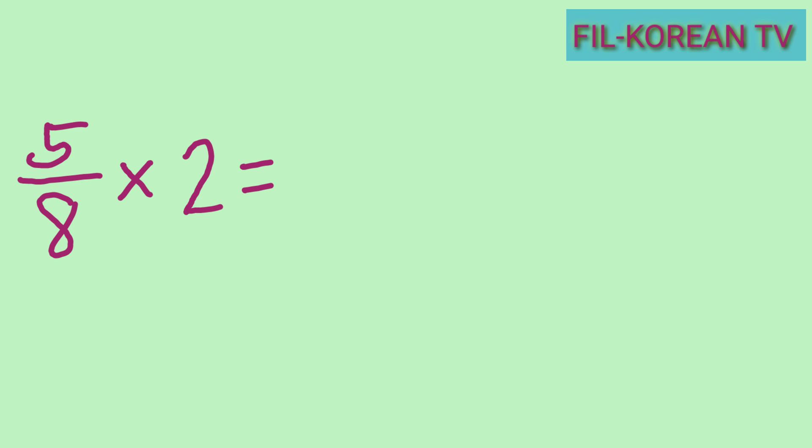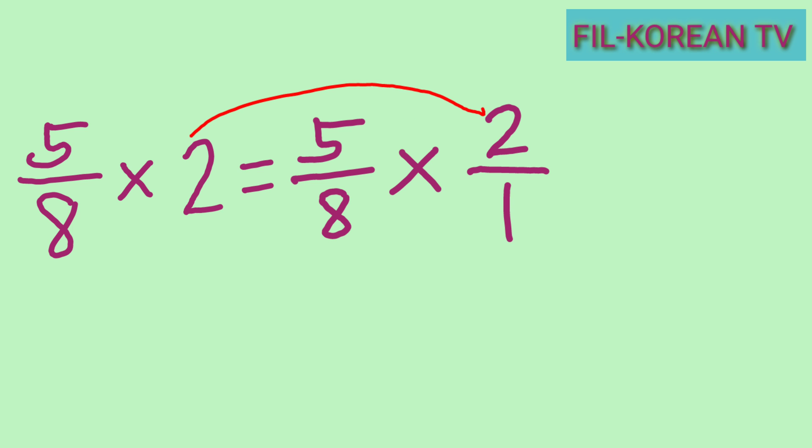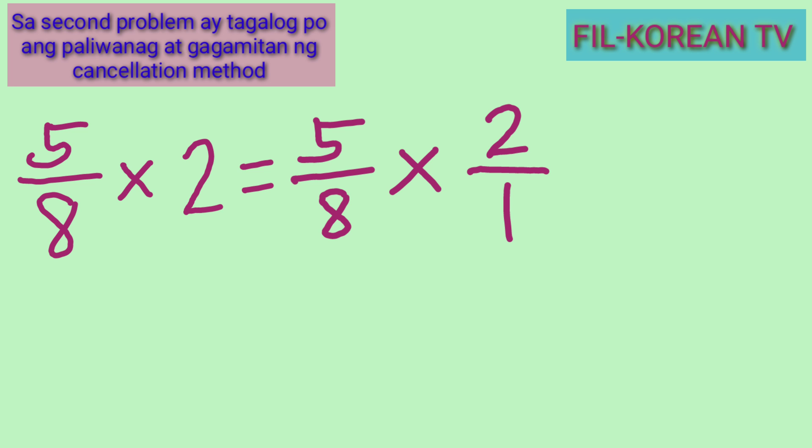Let's write the multiplicand 5/8, times the whole number 2, which will become 2 over 1. The whole number 2 is the numerator and we use 1 as the denominator, so it is now an improper fraction. Next step: multiply the numerators and multiply the denominators.